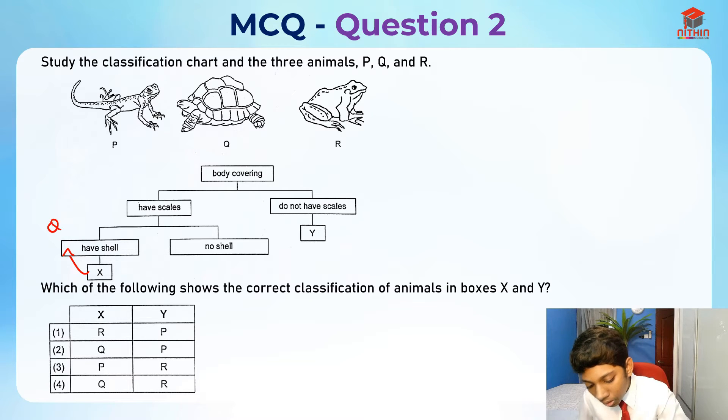So for X, we can see that the answer is Q. Let's take a look at X - it's not R, it's not P. So only 2 and 4 are accepted. We have already narrowed down our options now.